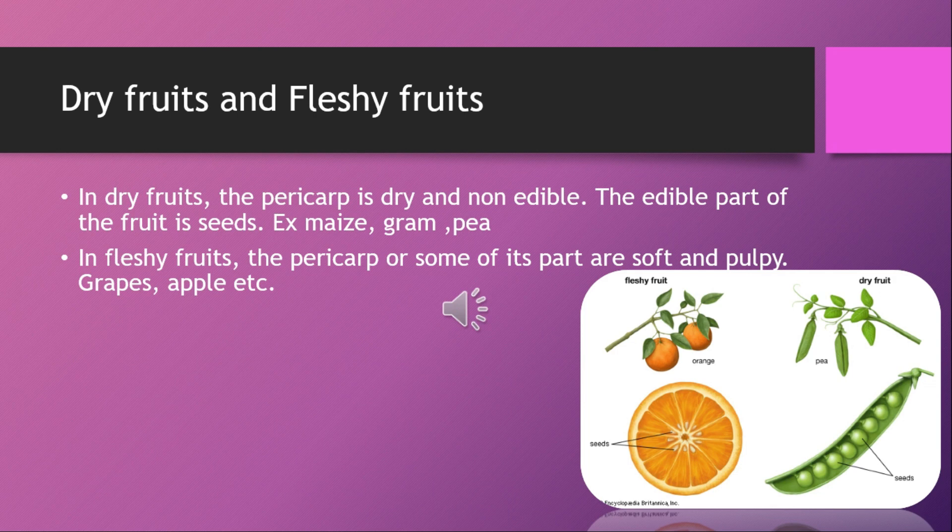False fruits: in these fruits, the thalamus of the flower forms the fleshy part of the fruit and the ovary remains as a small part containing the seed or seeds. These types of fruits are called false fruits. Examples include apple, pear, strawberry, and pineapple.